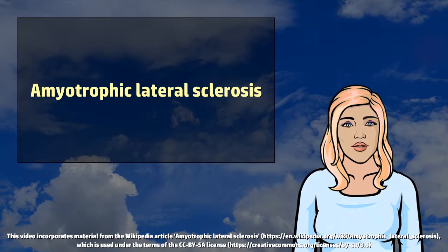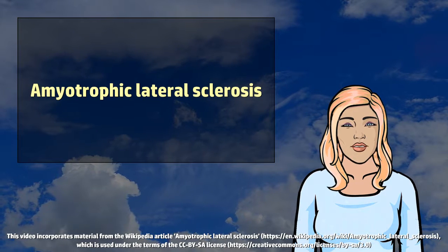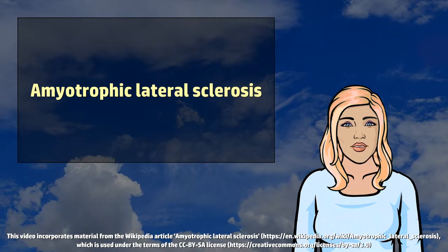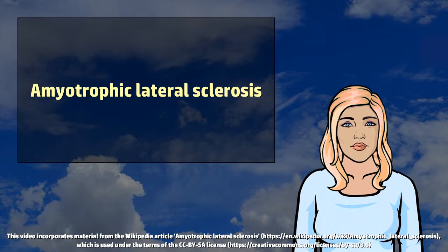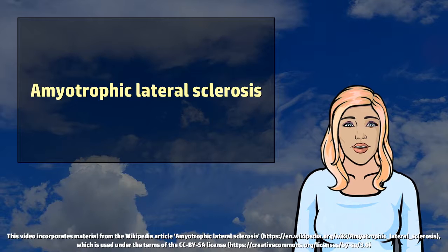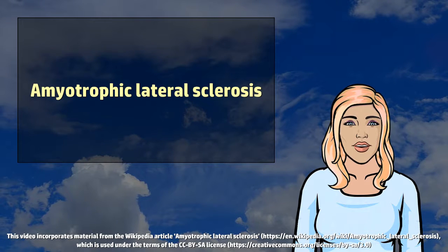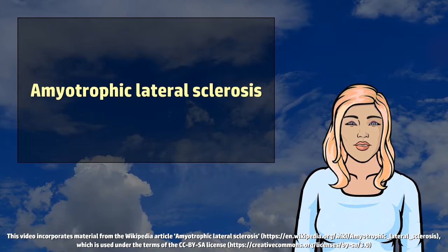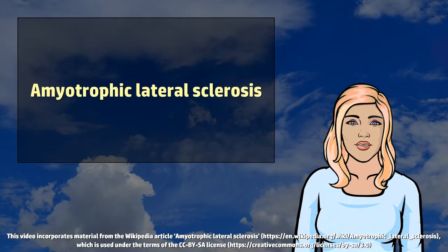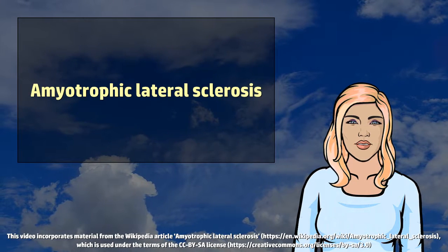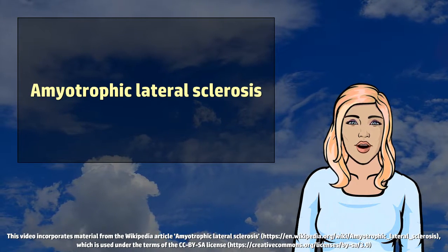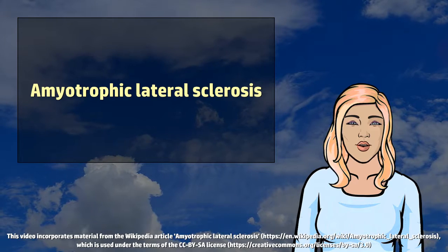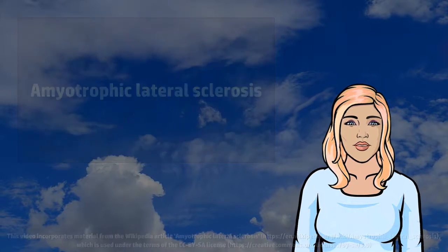Amyotrophic Lateral Sclerosis, ALS, also known as Motor Neuron Disease, MND, and Lou Gehrig's Disease, is a specific disease that causes the death of neurons that control voluntary muscles.